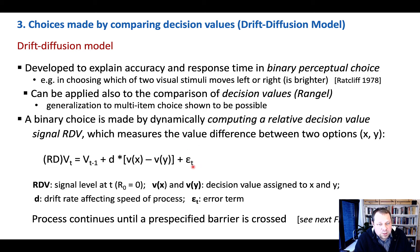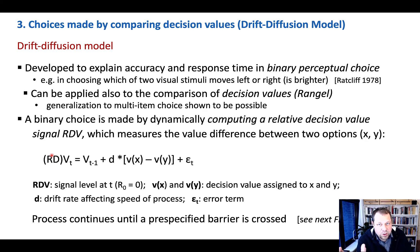There is some Gaussian noise applied to this. The value on the current time step is computed iteratively over a time range of about three to five seconds, or however long the choice takes.